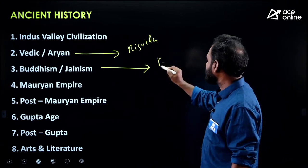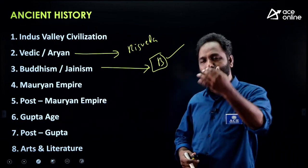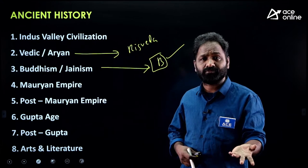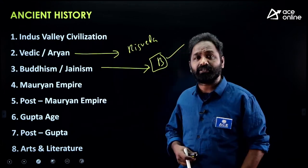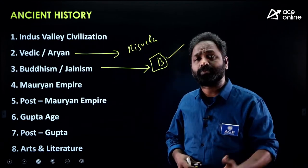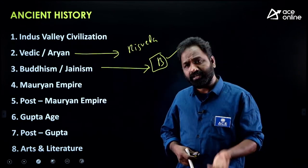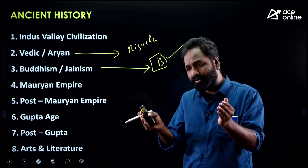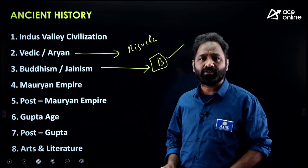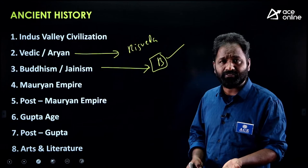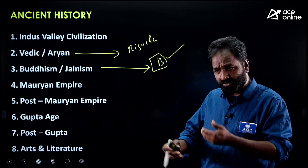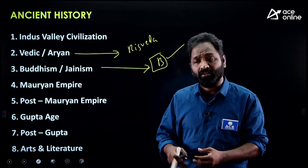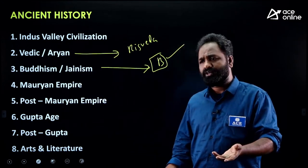For Buddhism and Jainism, they repeatedly ask questions. For Buddhism, know the background: Buddha's father name, mother name, wife name, the five events in Buddha's life, the language used by Buddhism, important books of Buddhism, where Buddha got enlightenment, and important stupas. For Jainism, know Vardhan Mahavira's father and mother names, which tree he got enlightenment under, where he died, texts related to Jainism, and the language used. That's 10 to 15 key points.